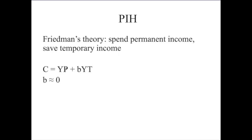The permanent income hypothesis says you're going to consume all of your permanent income, because there's no real point in saving it if you're going to have the same amount next year. If you average $50,000 a year, you can consume $50,000 this year, next year, and the year after — there's no real point saving any of that money today because you'll have it next year, at least in expectation. On the other hand, if you get a big windfall of temporary income today, you're going to want to save it and spend a little bit each year. Because of the declining marginal utility of consumption, you don't want to spend it all at once — you won't get as much utility from one big splurge as from spreading it out. So the marginal propensity to consume out of temporary income is going to be pretty close to zero. In Friedman's theory there are two separate marginal propensities to consume: one out of permanent income, that's close to one, and one out of temporary income, that's close to zero.